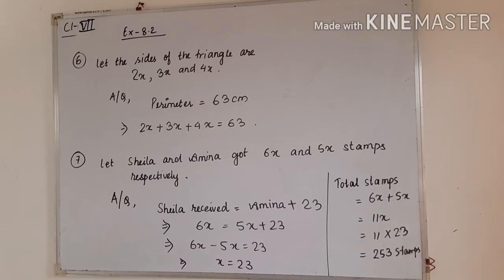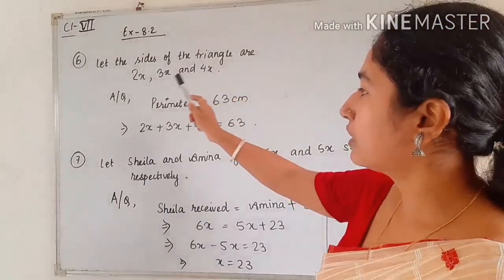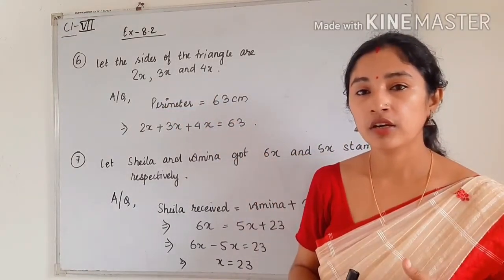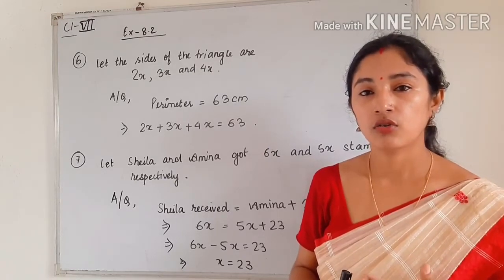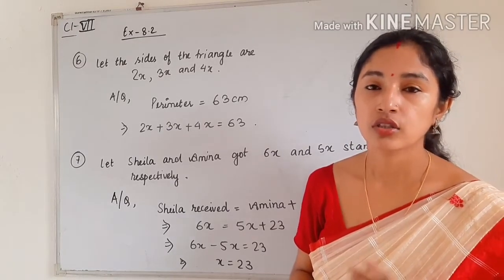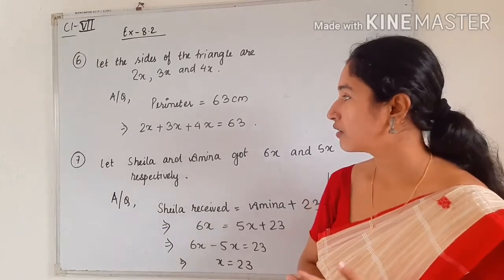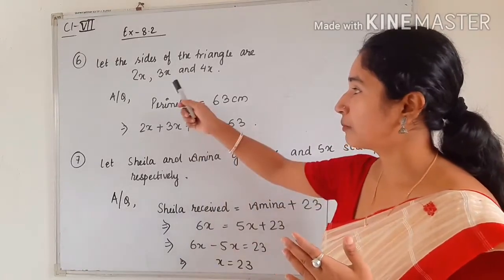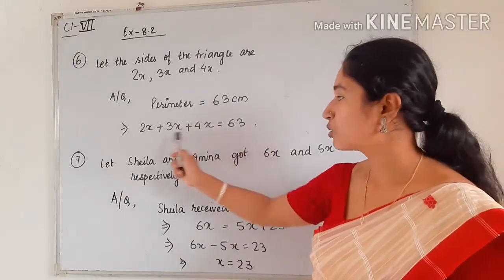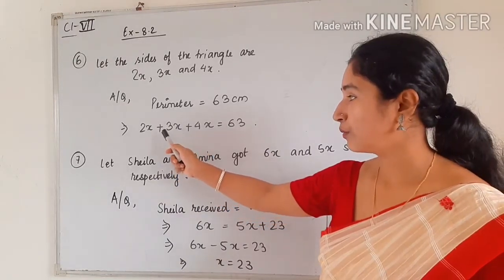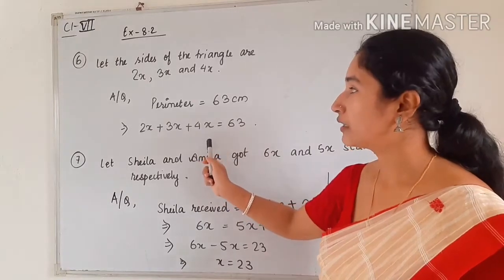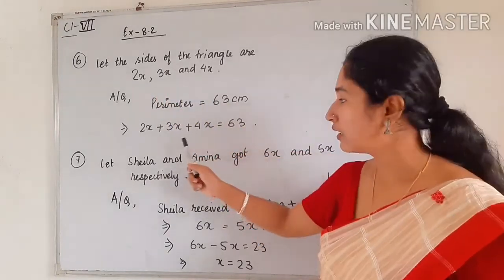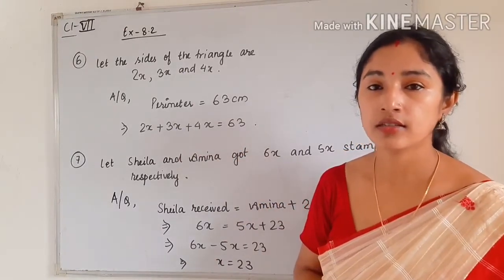In question number 6, the sides of a triangle are given in the ratio 2 is to 3 is to 4. Let the sides be 2x, 3x, and 4x. The perimeter is given as 63 centimeters, and perimeter equals the sum of all three sides. So 2x plus 3x plus 4x equals 63. You can easily solve this equation to find x, then substitute back to find each side length. Please try this one on your own.